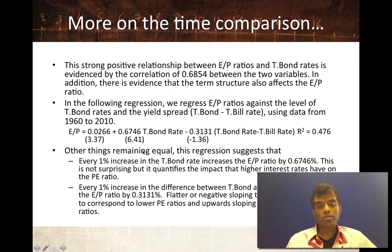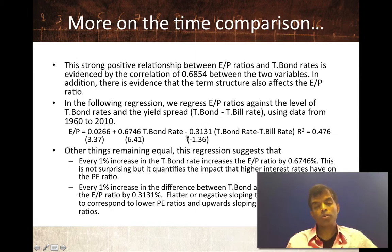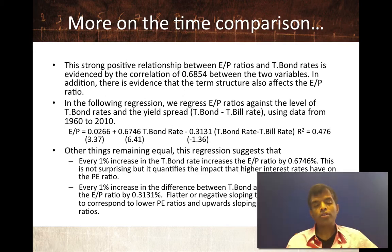The regression shows that every 1% increase in the T-bond rate increases the earnings-to-price ratio by 0.6746% — meaning the price-earnings ratio comes down. Every 1% increase in the slope of the yield curve reduces the earnings-to-price ratio by 0.3131 — meaning price-earnings ratios go up. So higher interest rates or a flat or downward-sloping yield curve are bad for stocks, while lower interest rates and an upward-sloping yield curve are good for stocks.